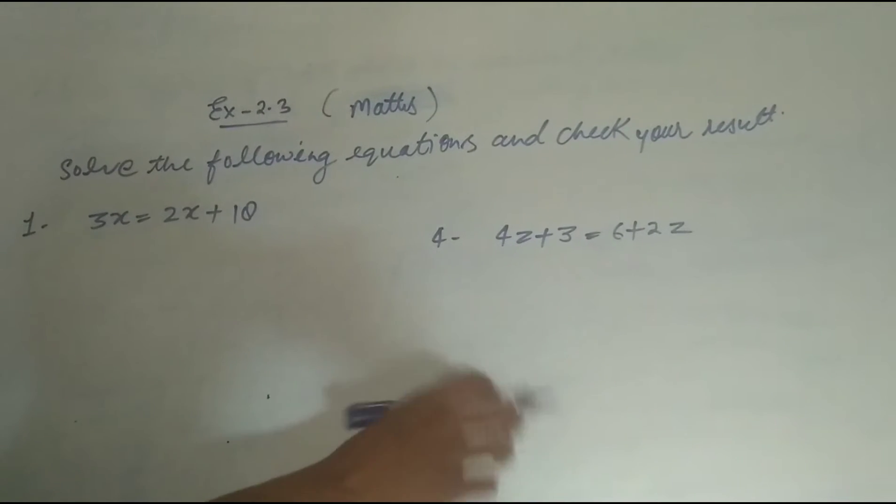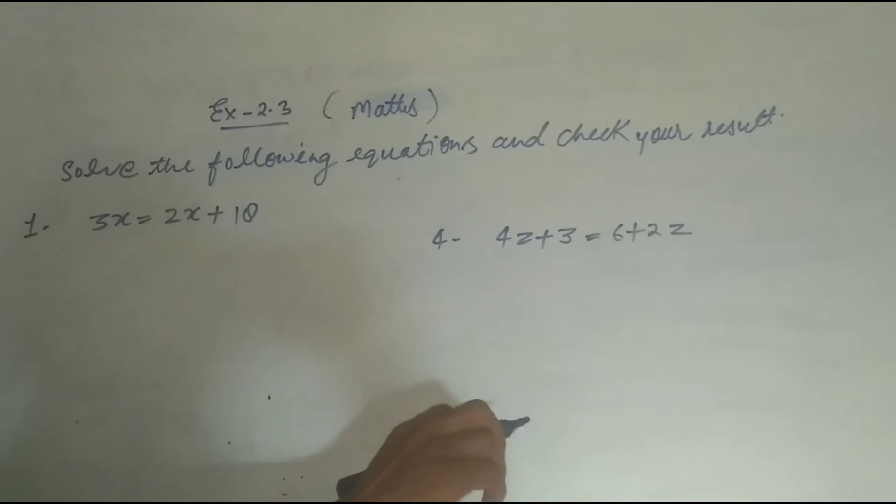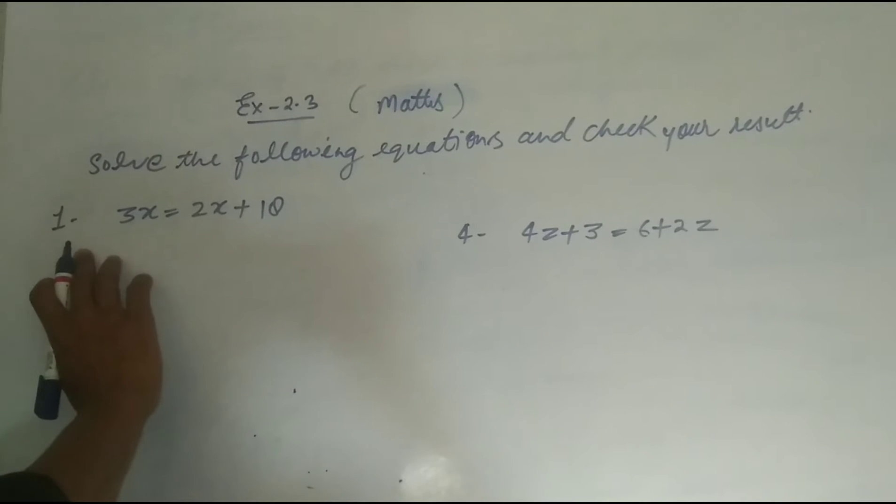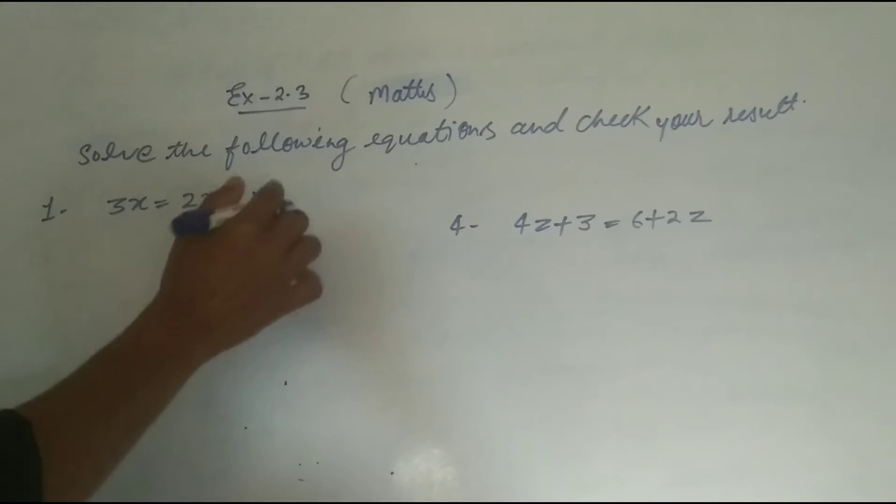Here we have to find the result and verify it. So in the first part, given 3x = 2x + 18.